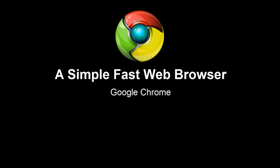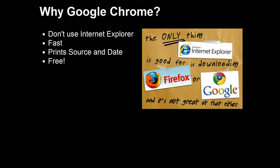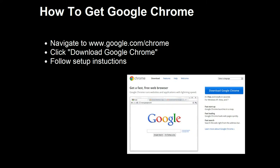The first tool we're going to talk about is Google Chrome web browser. Don't use Internet Explorer — it's an unstable browser and we have higher expectations for you as members of our team. Google Chrome is fast, it's free, and its print function works great for extemp research, printing the source and date at the top of the page. To get it, go to www.google.com/chrome, click 'Download Google Chrome,' follow the prompts, and you'll be set up in no time.